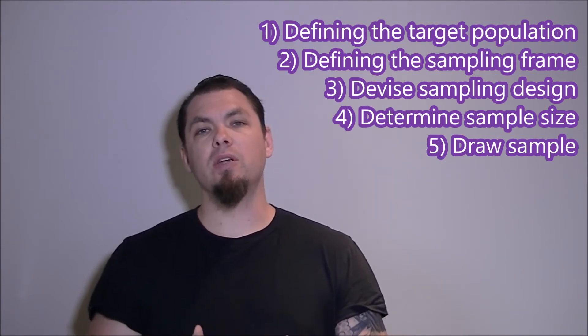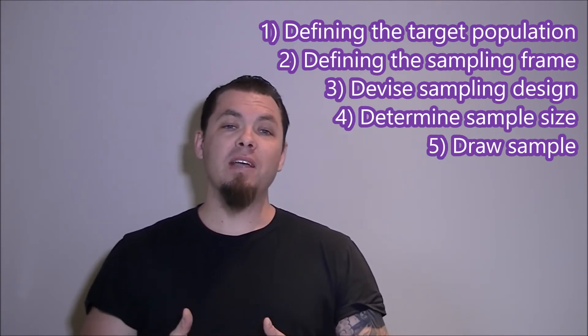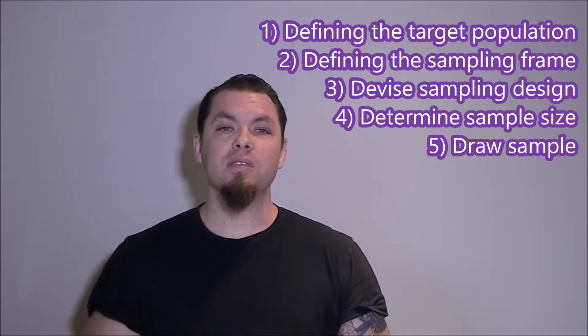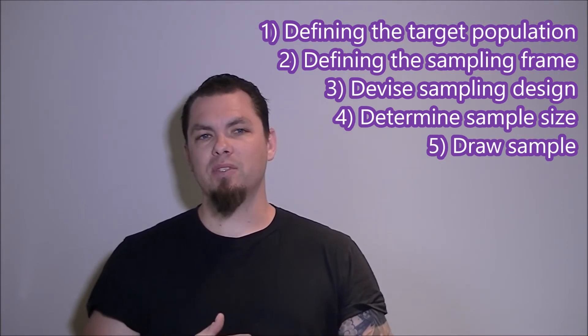Let's talk about the steps in probability sampling. These are: defining the target population, constructing a sampling frame, devising a sampling design, determining sample size, and collecting your sample. The last two — determining sample size and collecting the sample — are a bit beyond this talk, so I'll skip those, but just know that they're necessary.